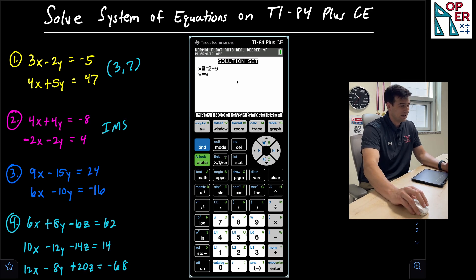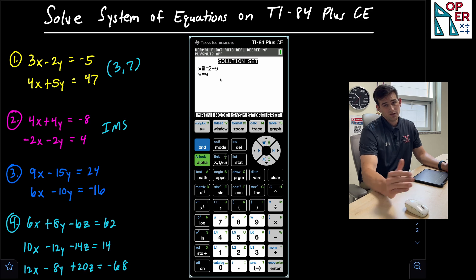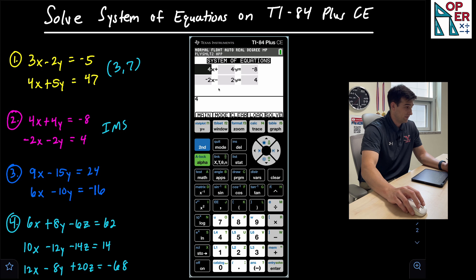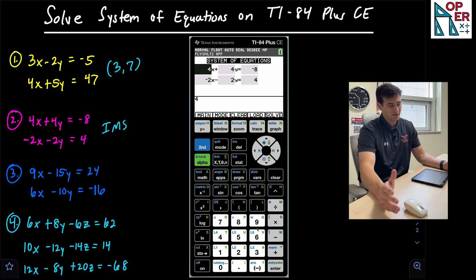So I'm going to write I M S for number two, that's infinitely many solutions. That's what it's going to look like when you use this app on your calculator. So let's hit zoom. And now let's go back and do example number three. So we've done one solution. We've done infinitely many. So this example must be a no solution. Let's see what the calculator tells us.